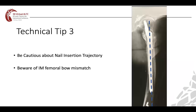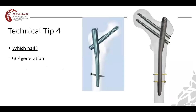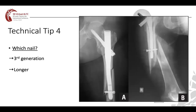Technical tip three: be cautious about nail insertion trajectory. Beware of the intramedullary femoral bow mismatch — when using short nails, which are straight without an anterior bow, they can impinge on the anterior cortex. Make sure in the lateral view that you will not break the femur distally; sometimes it's better to use longer nails with an anterior bow. Technical tip four: preferably use a third-generation nail, better than older ones. Longer nails are better than shorter ones to avoid complications, and of course a reamed nail.